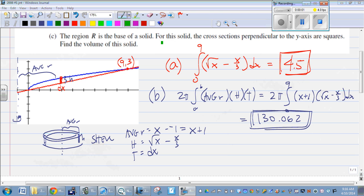Alright, so for part C, the region R is our base, and the cross sections are perpendicular to the y-axis, and they're going to be squares. So we want to find the volume of that solid.